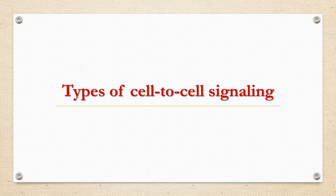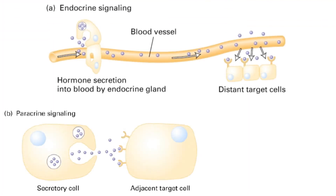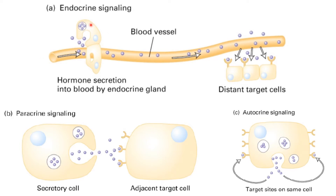If we see the types of cell signaling, there are three types: endocrine, paracrine, and autocrine. In endocrine, a substance called a hormone is secreted into the bloodstream and transported to distant target cells. In paracrine, the secretory cell is adjacent to the target cell. While in autocrine, the secretory cell itself is the target cell. Examples: endocrine - insulin; paracrine - neurotransmitters and autacoids; autocrine - cell division by growth factors and activated T cells.